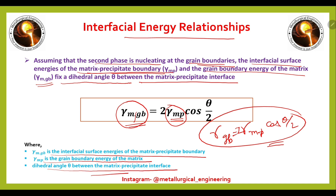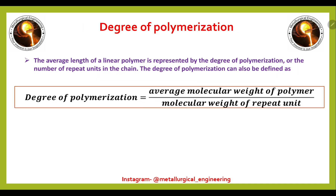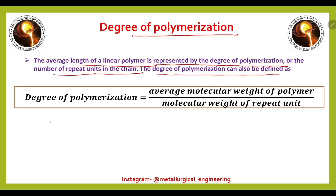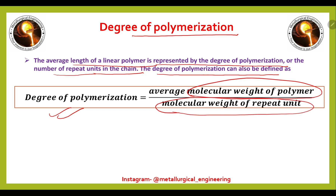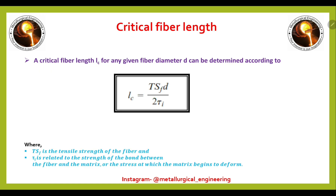The degree of polymerization is defined as the average length of a linear polymer, represented by the number of repeat units in the chain. It can be calculated as: degree of polymerization = average molecular weight of the polymer divided by the molecular weight of the repeating unit.